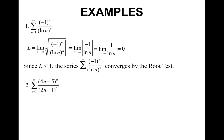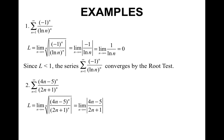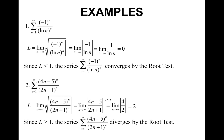For our next example, we have n powers, so I take the absolute value of the sequence and take the nth root. The nth root cancels the nth power, leaving me with the absolute value of (4n − 5) over (2n + 1). When I plug in infinity, I get infinity over infinity, so I apply L'Hôpital's rule and get 4 over 2, which reduces to 2. Since the limit is greater than 1, this series diverges by the root test.